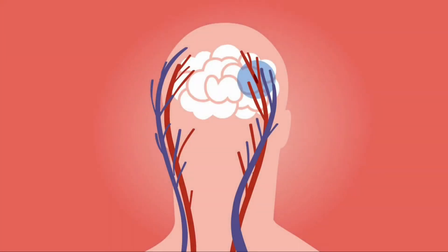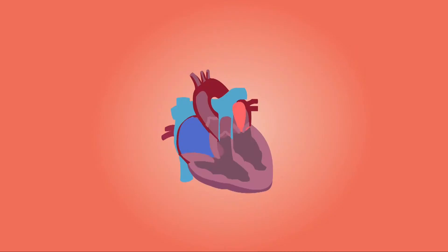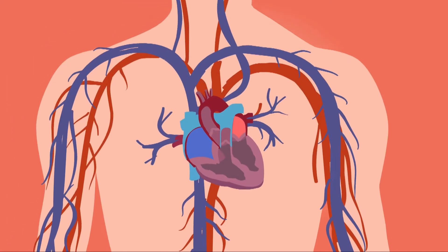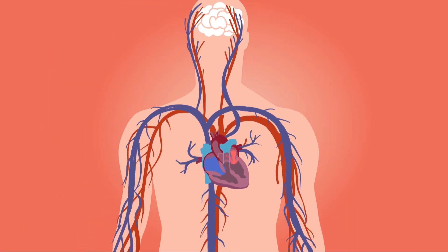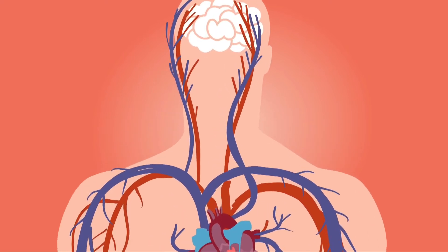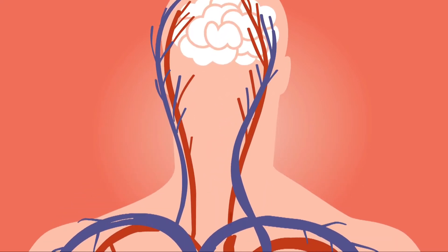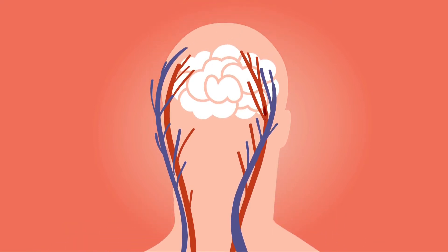A stroke is a brain attack that occurs when the blood supply to part of your brain is interrupted or reduced due to plaque deposition or clot formation, which prevents brain tissue from getting enough oxygen and nutrients. Brain cells begin to die in minutes, creating a medical emergency where prompt treatment is crucial.